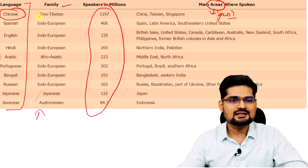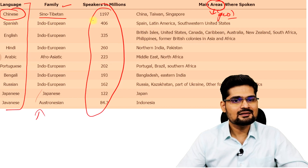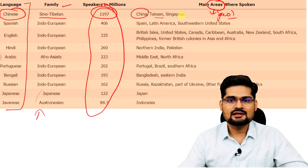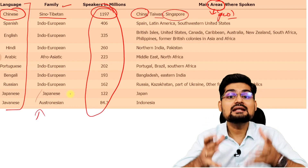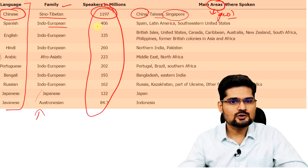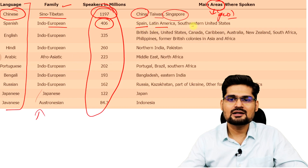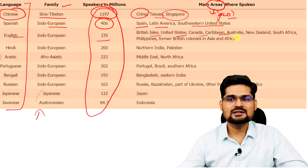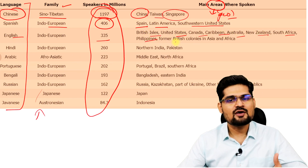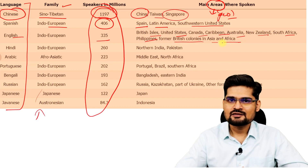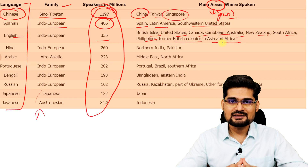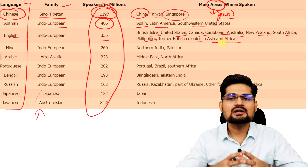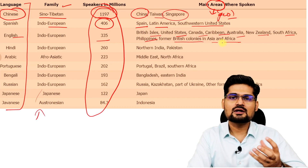Looking at the data table: Chinese (Sino-Tibetan/Mandarin) has 1197 million speakers, mainly in China, Taiwan, and Singapore. Spanish (Indo-European) has 406 million speakers in Spain, Latin America, and southwestern United States. English has 335 million speakers across the British Isles, US, Canada, Caribbean, Australia, New Zealand, South Africa, Philippines, and former British colonies including Asia, Africa, and India. These are the spatial patterns of languages across continents — that's why it's purely a human geography concept.